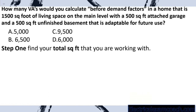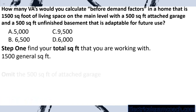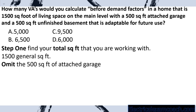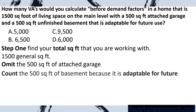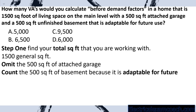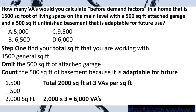Step one is to find our total square feet. We have our 1,500 general — we will count it. We omit the 500 square foot of attached garage. We count the 500 square foot of basement because it is adaptable for future use. In your testing it'll say either or, and in the real world it's almost always adaptable for future use. That gives us 2,000 square feet. We take 2,000 square feet multiplied by 3 VAs per square foot, and we select D.